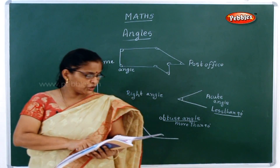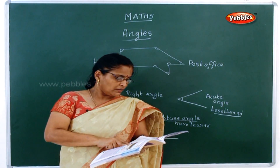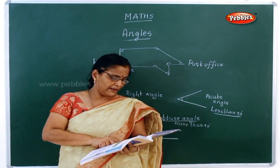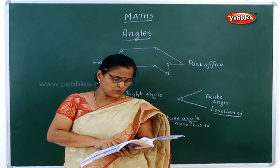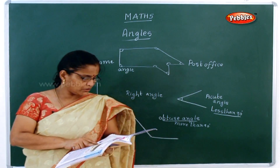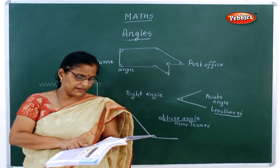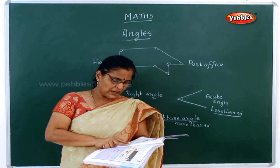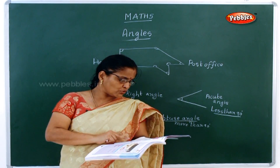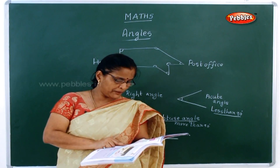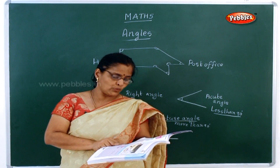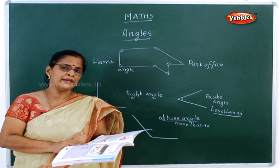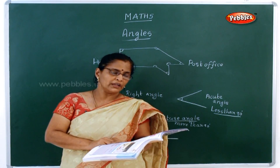In the activity, make your own angle tester. Keep the two strips as shown like the English alphabet L. The angle formed between two strips is called right angle. So the English alphabet L represents a right angle. Next, fix the two strips like the alphabet V — one strip is bent towards the other — and a different angle is formed, which is less than a right angle. This is called acute angle.